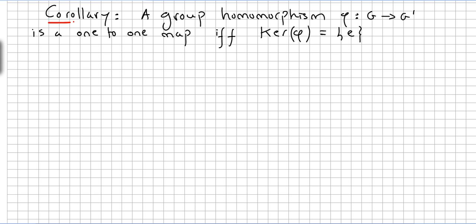So I just want to get into this very important corollary of the previous theorem. A group homomorphism Φ from G to G' is a one-to-one map meaning injective if and only if the kernel of Φ equals the identity. The kernel of Φ is a set only with one element, the identity.